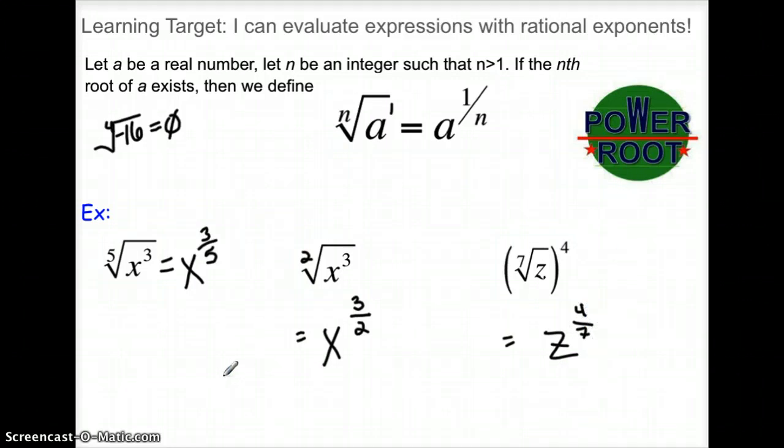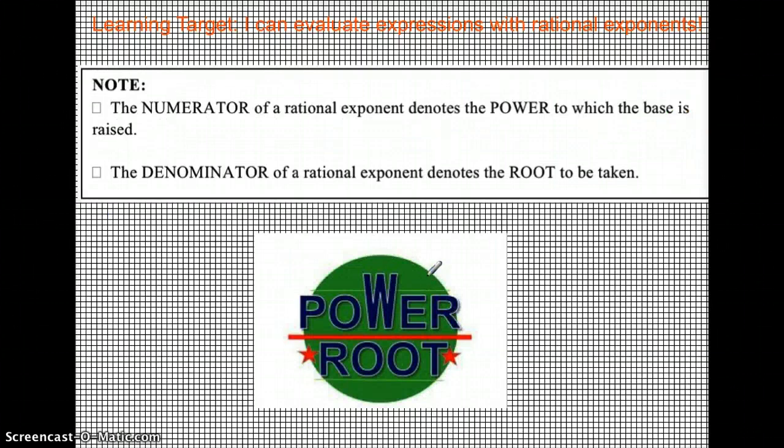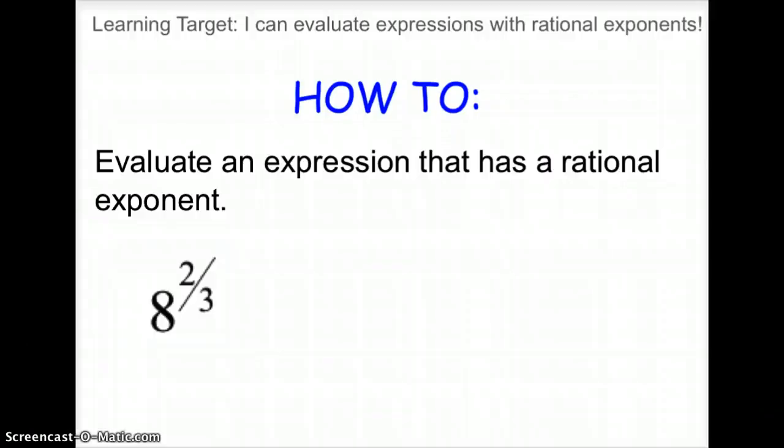Okay. So the key here is power over root. And I'm stressing that I even put in another slide here. The numerator is the power. The denominator is the root. That's really the key to rational exponents. So just don't forget that, and you will be fine.